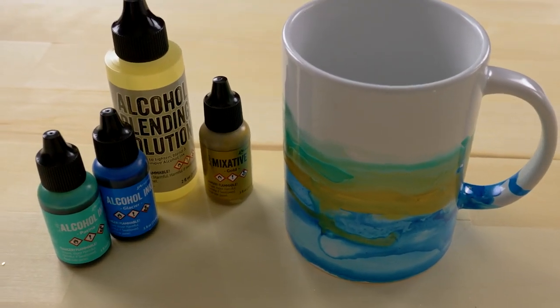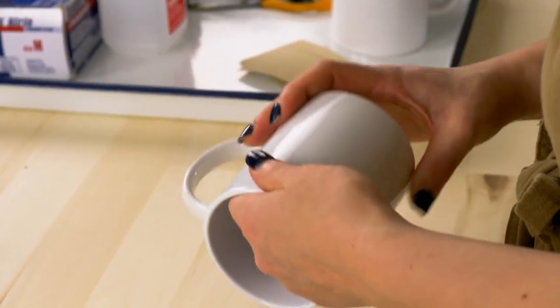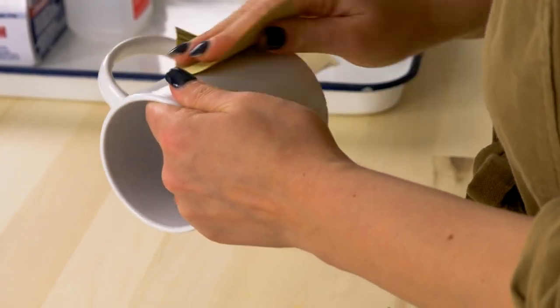I'm going to show you how to make a custom hand-tumbled alcohol ink ceramic mug. Use a fine grit sandpaper to scuff up a clean blank mug.